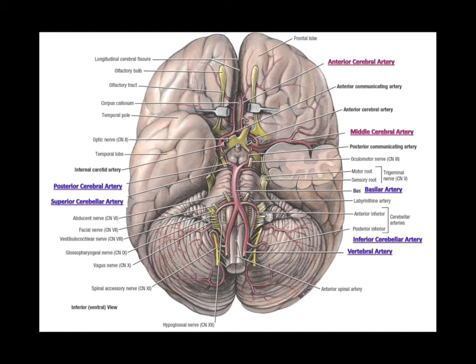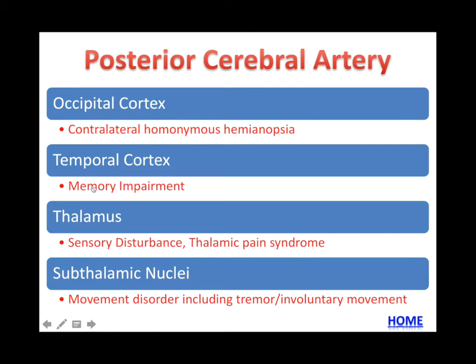The third most important cerebral artery is the posterior cerebral artery. It impacts the occipital cortex, temporal cortex, the thalamus, and subthalamic nuclei. If a person has a stroke of the posterior cerebral artery, they will have contralateral homonymous hemianopsia — visual field loss on the opposite side — where both eyes lose their visual field on one side of the body.